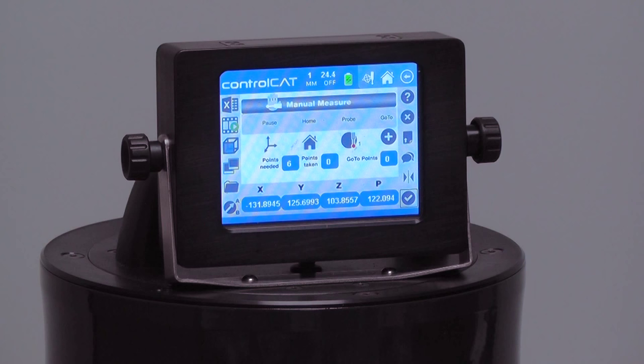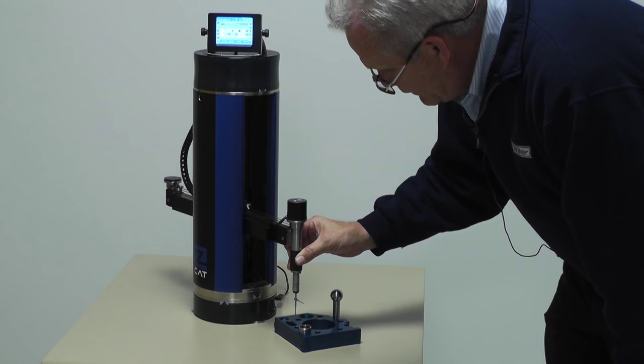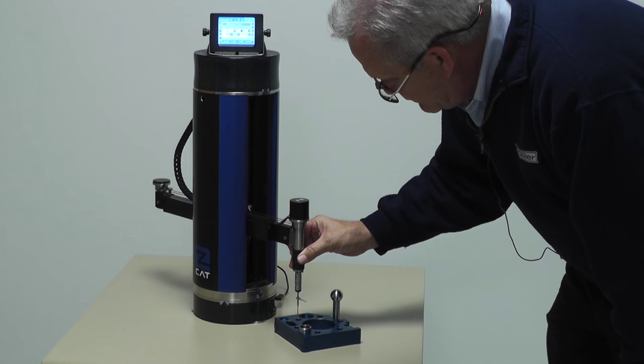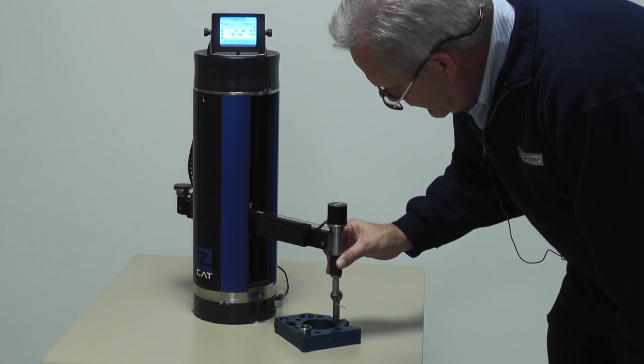So the six points, again, will be the three points on the plane, two points on the line, one point on a circle. So I'm going to physically and manually come down here and touch three points on that plane.